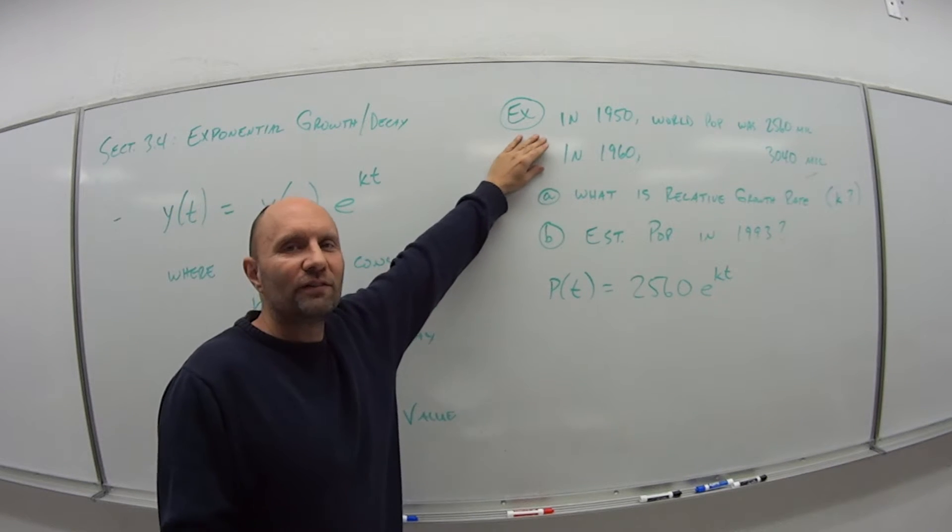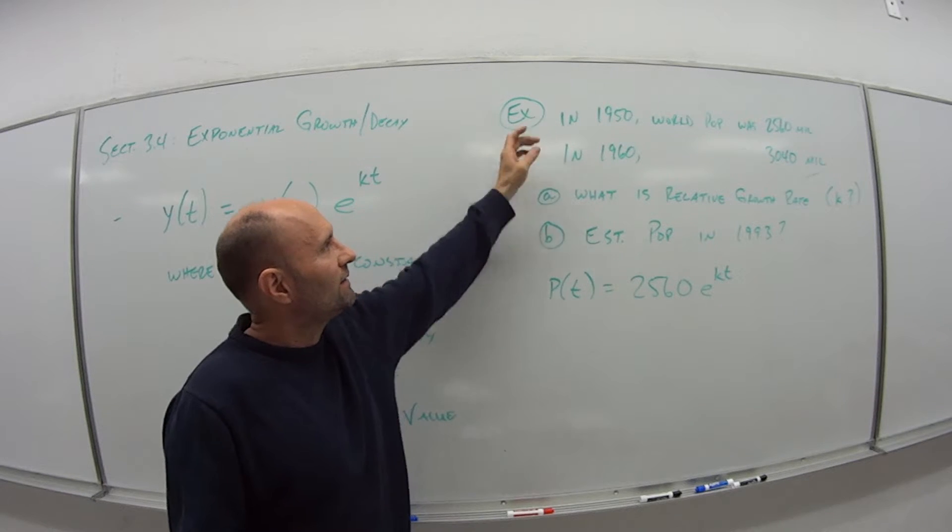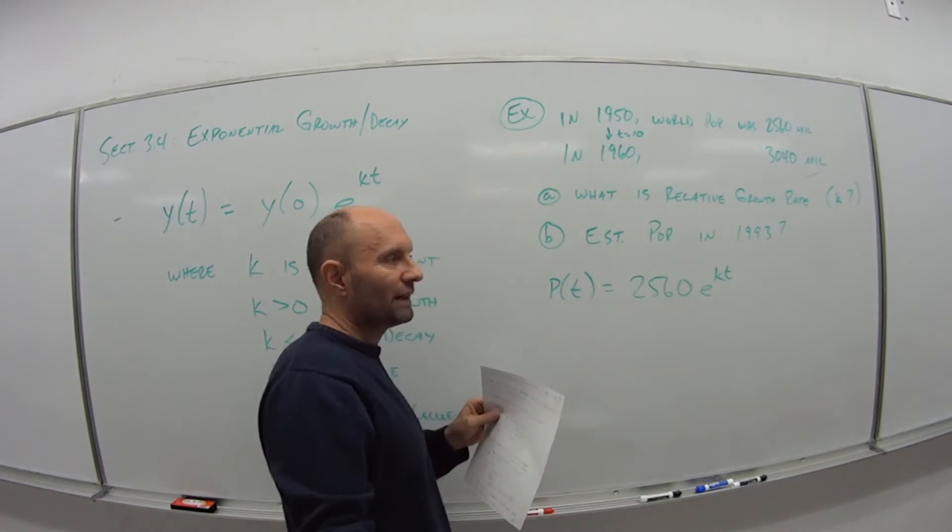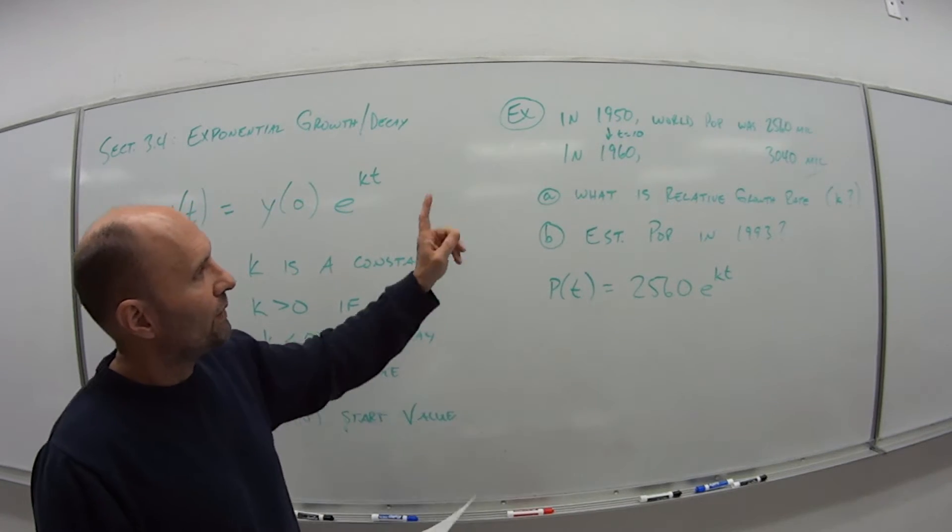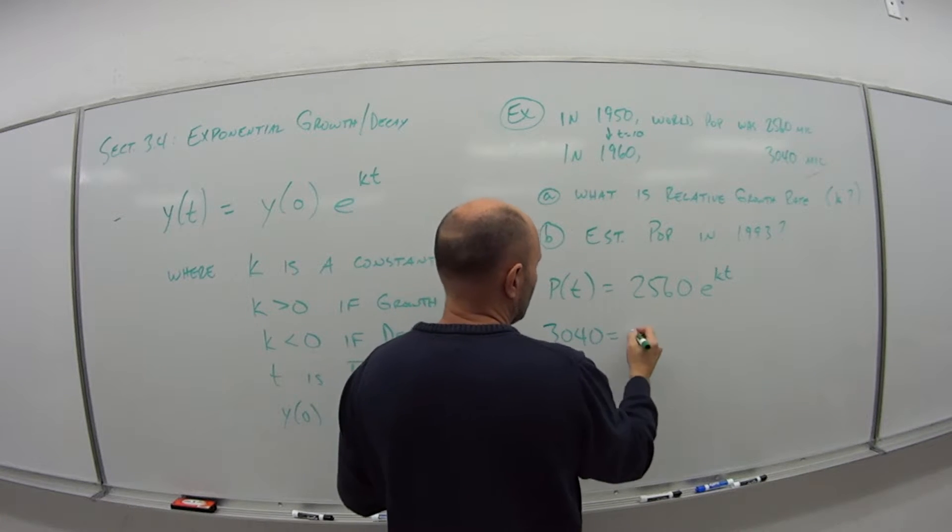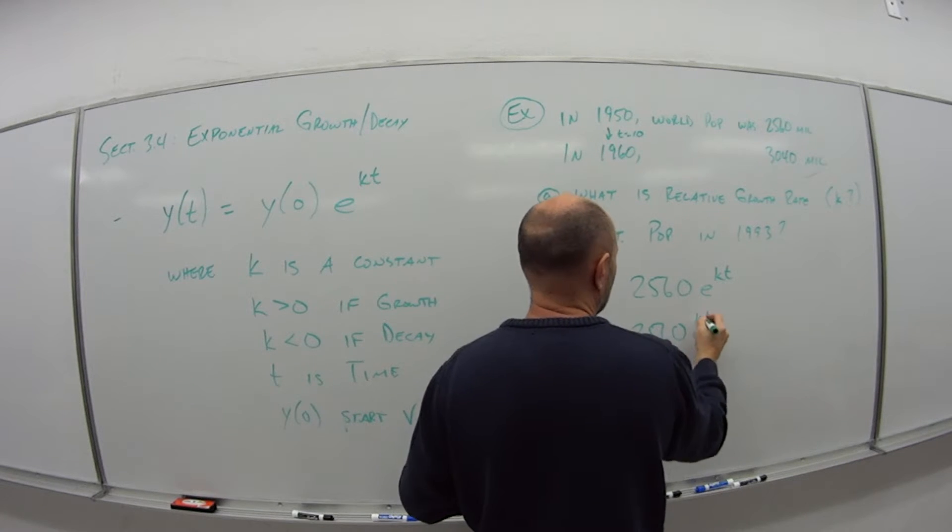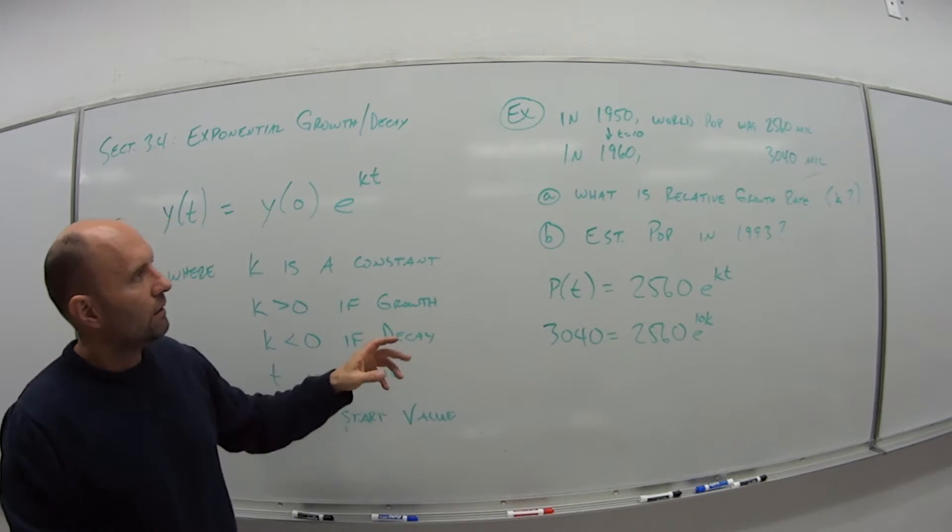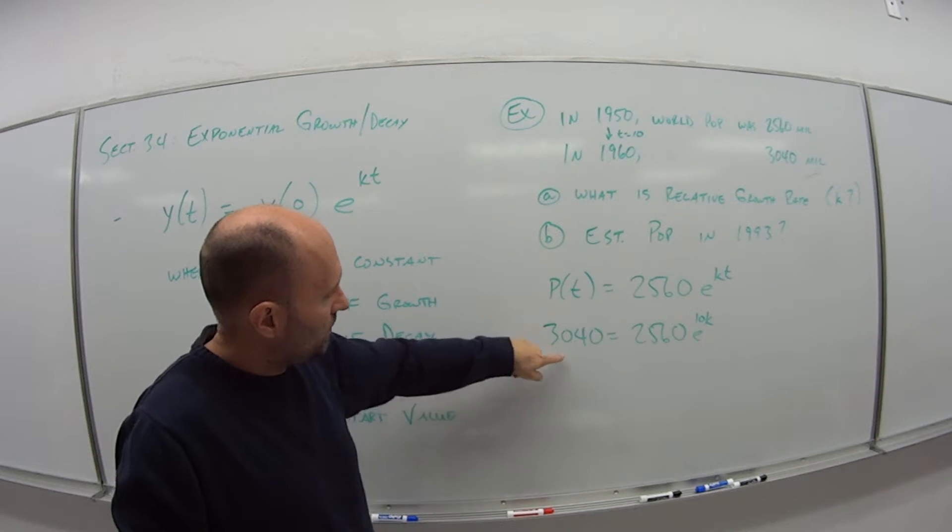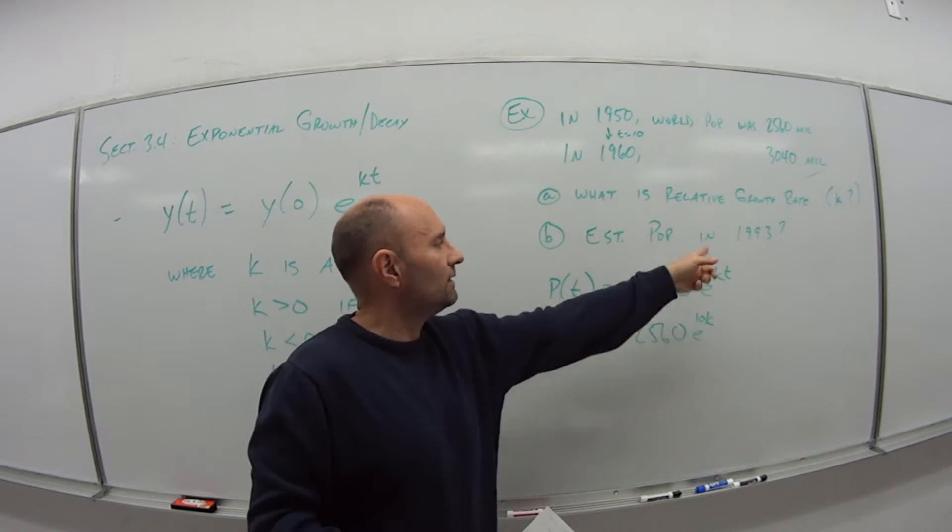And I can do that how? Well, with this second piece of information I was given. It tells me in 1960, that was time is equal to 10 years later. So at 10 years later, I was 3040, equals 2560 e to the k times 10. So from that second line of information, given my original equation, p of 10, which is 3040, is 2560 e to the 10k.